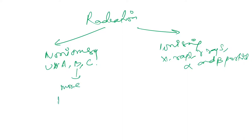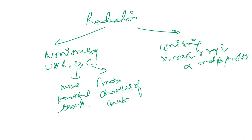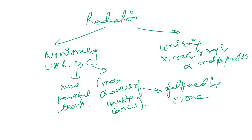Among UV rays, B is more powerful than A, and C has the maximum chances of causing cancer. However, we do not get cancer from UV-C because the ozone layer filters it. So the maximum cancer we get is due to ultraviolet B — UV-B is the most common carcinogenic ultraviolet ray to reach the Earth.